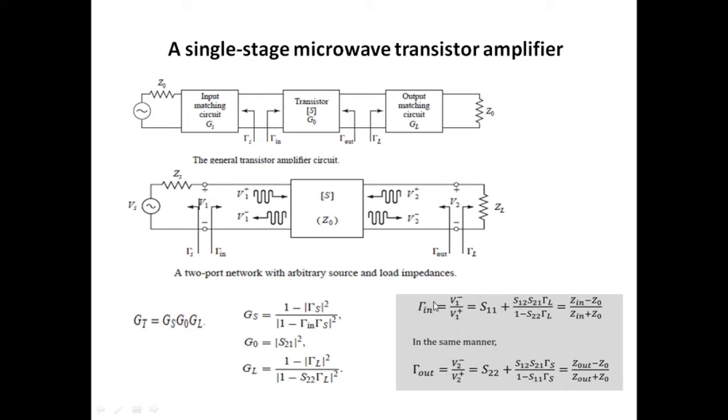Apart from this, there are two important formulas related to stability. Gamma in equals Z in minus Z naught divided by Z in plus Z naught, where Z in represents input impedance of the port. And gamma out equals Z out minus Z naught divided by Z out plus Z naught, where Z out represents output port impedance.